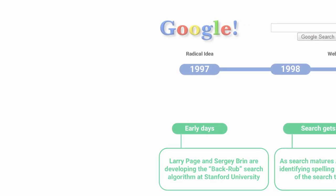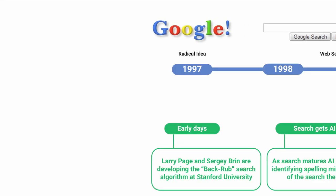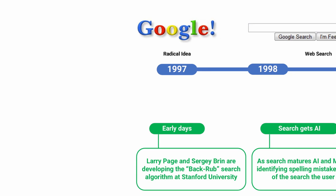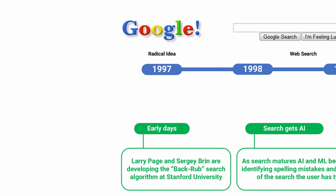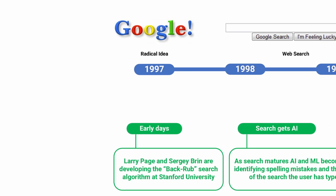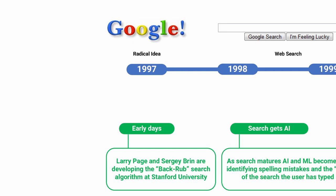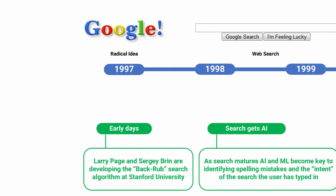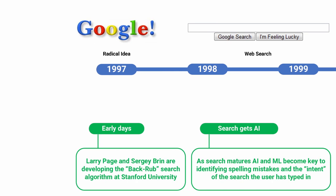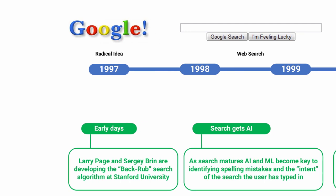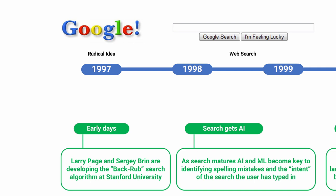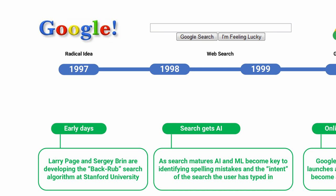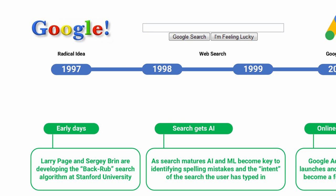The story starts when Larry Page and Sergey Brin are developing the BackRub search algorithm at Stanford University. They took a different approach than most search engines, which looked at how many times a word appeared on a page, and instead looked at how many times a page was cited by others or linked to by others.